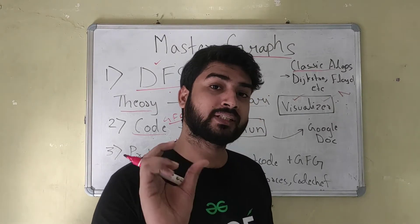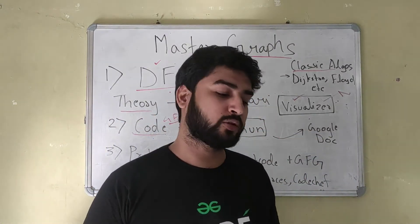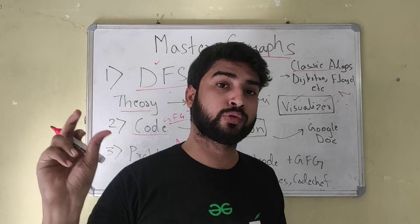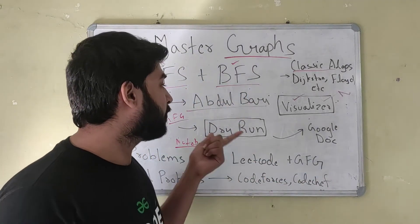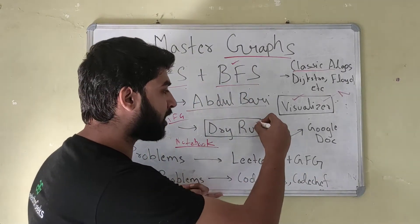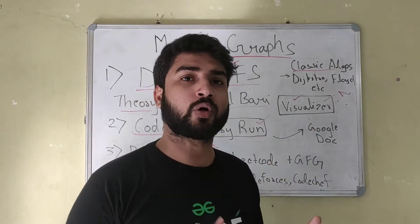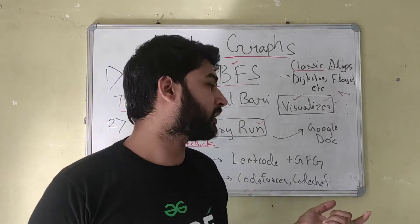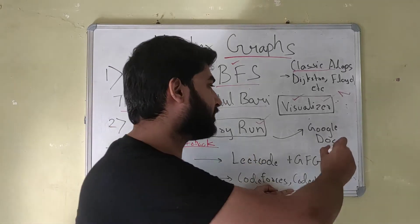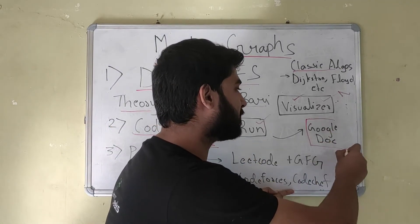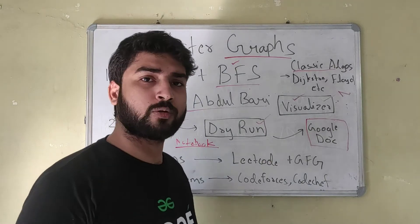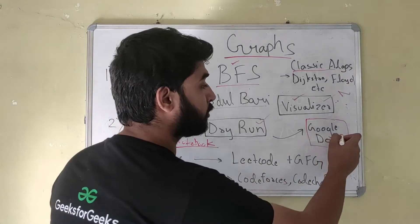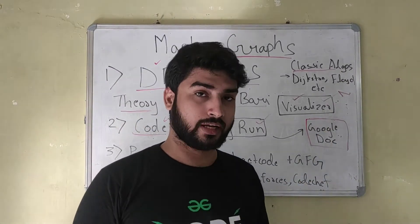You should understand what each and every line of the code is doing. For depth first search, understand how the recursion is working. For breadth first search, understand how the queue is working. That's why I want you to dry run your code before running it on a compiler or IDE. After you're done, then check it in a code editor. Store whatever code you've learned in a Google Doc, Notion, GitHub — it doesn't matter — but store it in one place so that you can refer to it just before going into interviews.